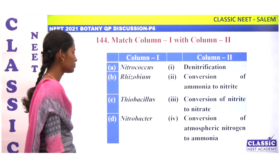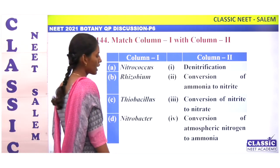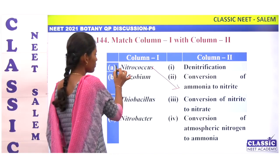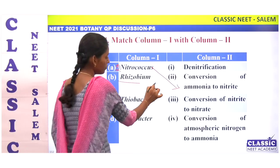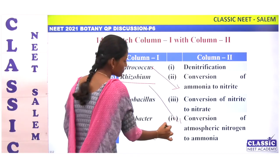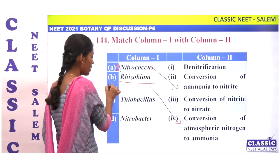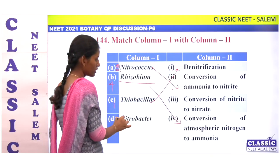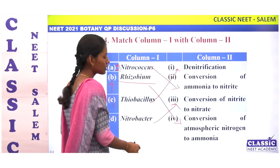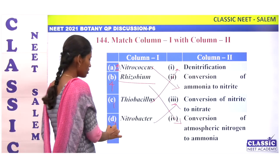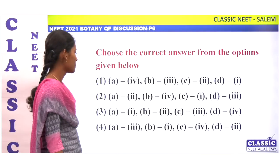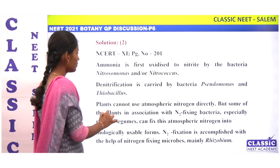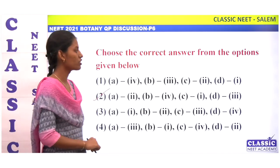Next match: Nitrosomonas — conversion of ammonia to nitrite — A is 2. Rhizobium — conversion of atmospheric nitrogen to ammonia — B is 4. Thiobacillus — denitrification — C is 1. Nitrobacter — conversion of nitrite to nitrate — D is 3. Match is 2, 4, 1, 3. Option 2.